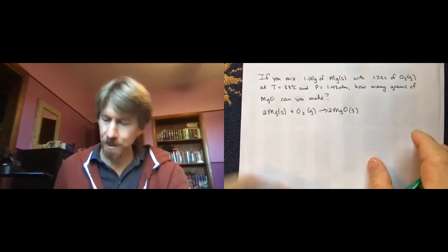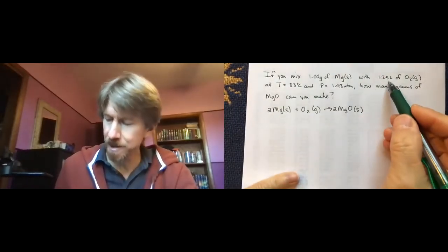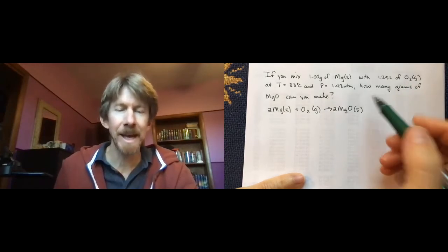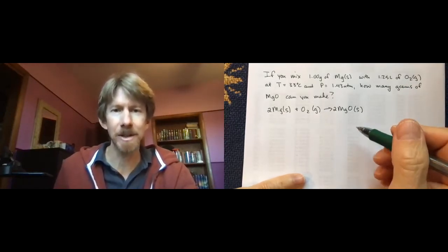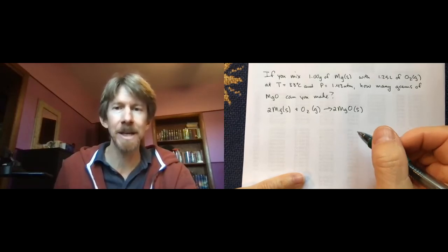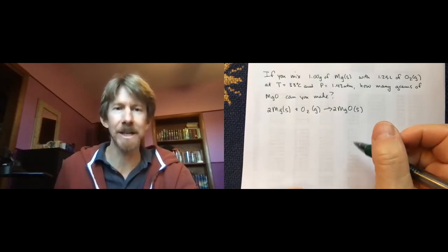It says, if you mix 1.00 grams of magnesium with 1.25 liters of oxygen at T equals 33 degrees Celsius and pressure equals 1.43 atmospheres, how many grams of magnesium oxide can you make?